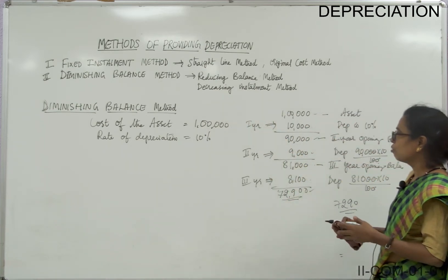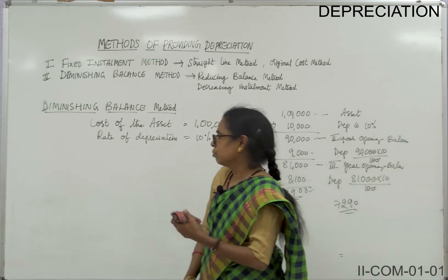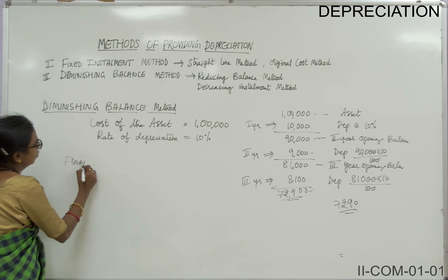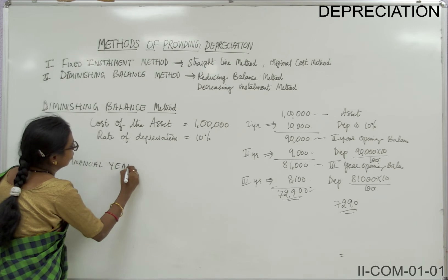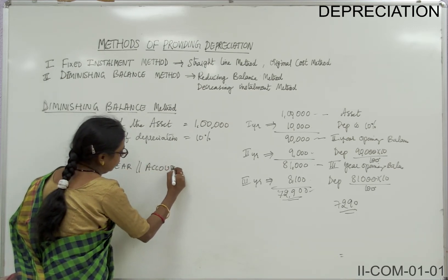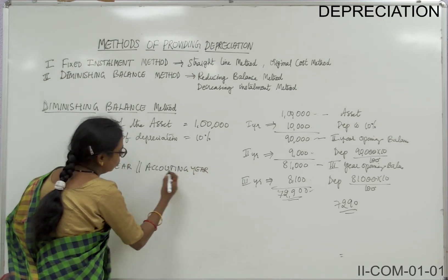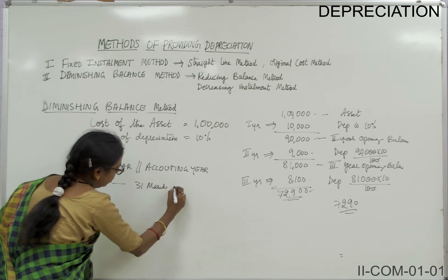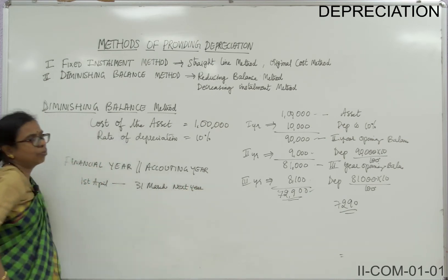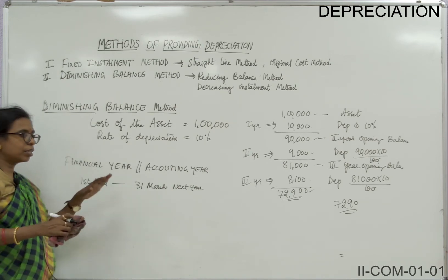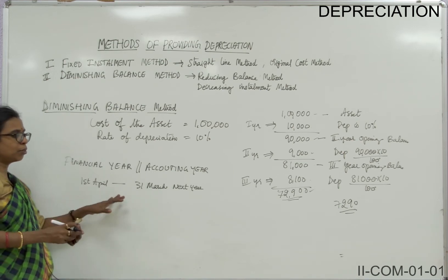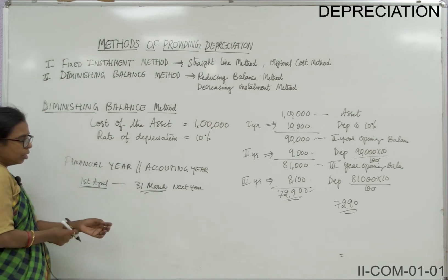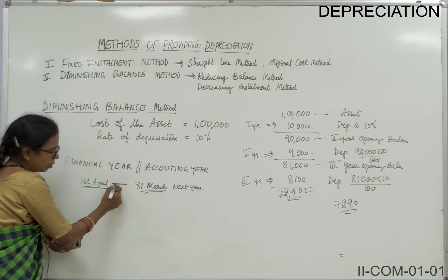An important point to keep in mind is the financial year. The financial year starts on 1st April and ends on 31st March of the next year. The date of purchase of the asset is very important. From that date, the amount of depreciation is to be calculated. So the accounting year from 1st April to 31st March must be kept in mind while doing exercises.